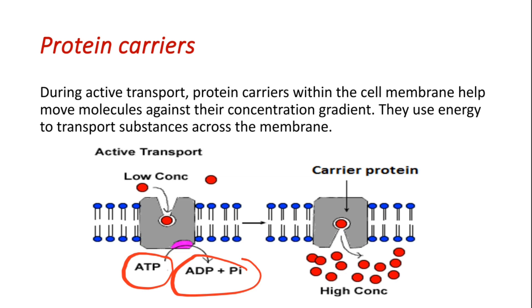That released energy is then used in different processes like active transport. In the diagram, the area shaded pink represents the energy being used. The carrier protein, shaded gray, is the one performing the action — it is found within the cell membrane and it helps move ions from where they are less concentrated to where they are highly concentrated.